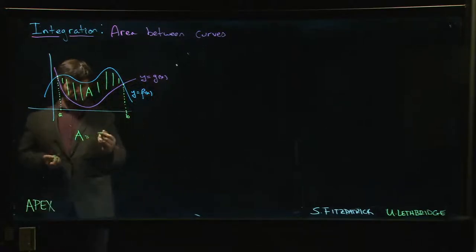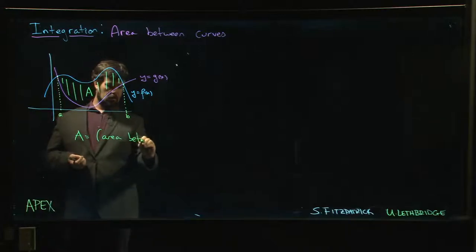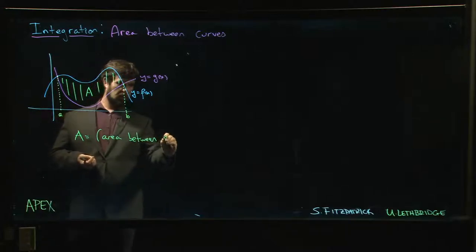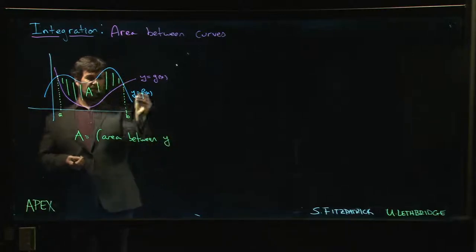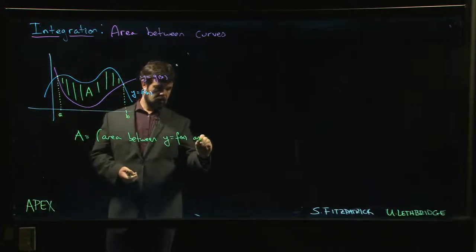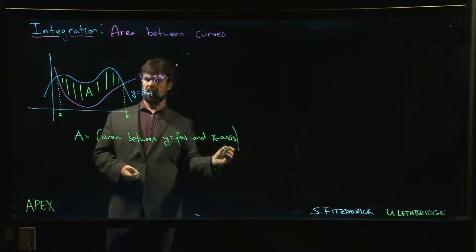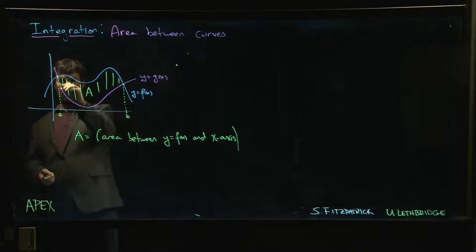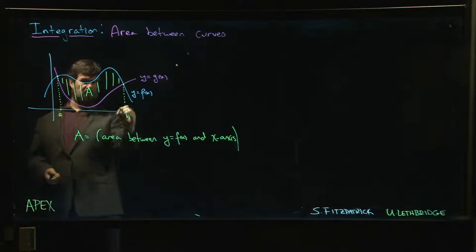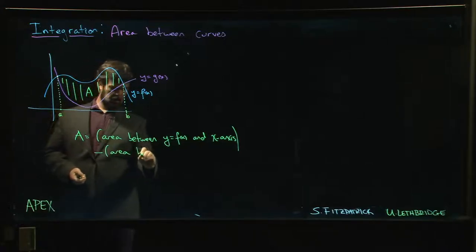So between f of x and the x-axis, meaning this whole area here, that big area, minus the area between y equals g of x and the x-axis. We only want the area in between, so